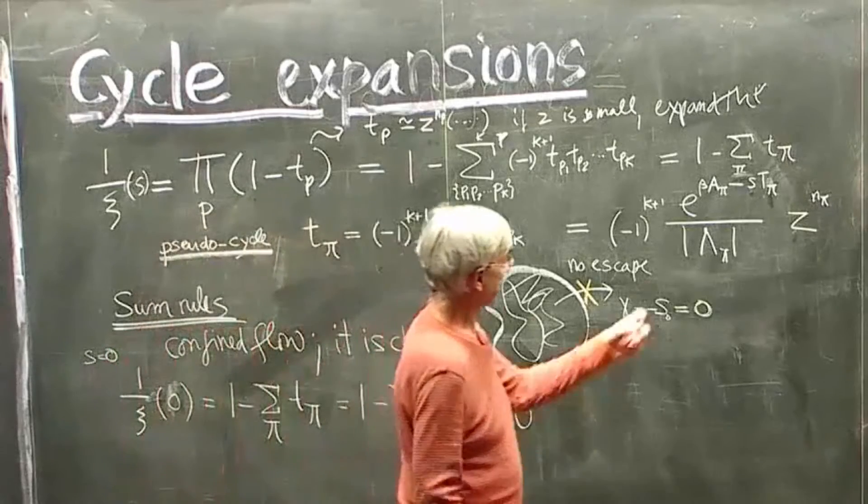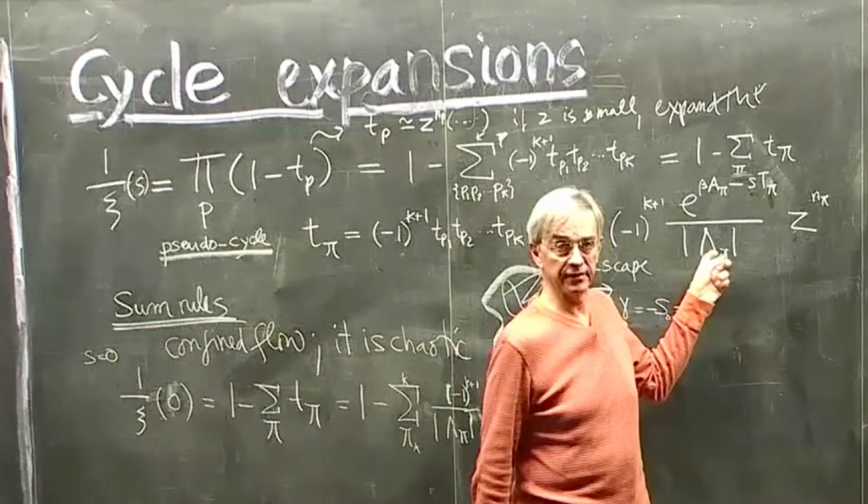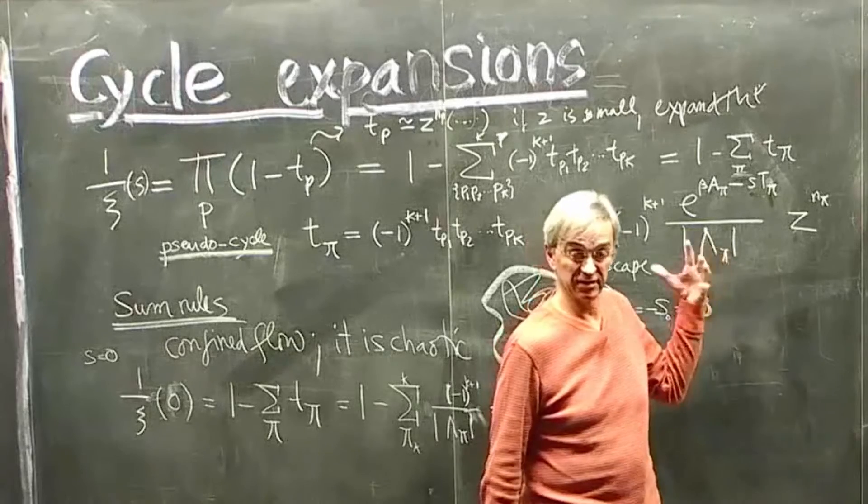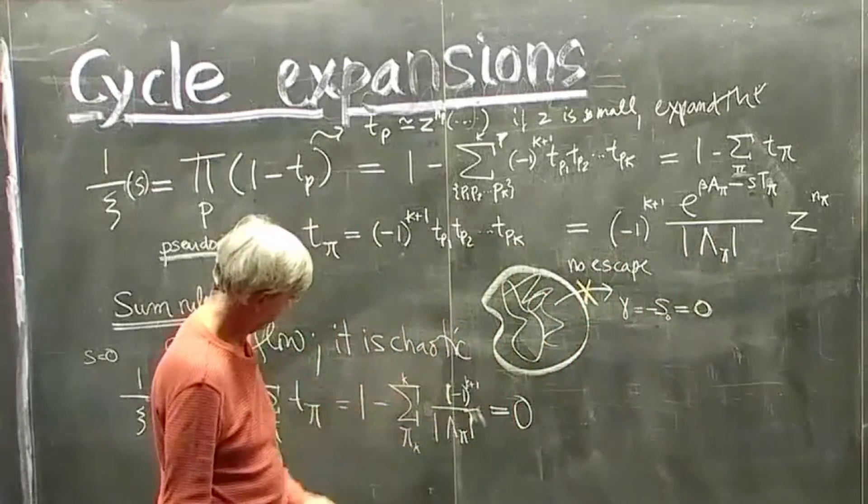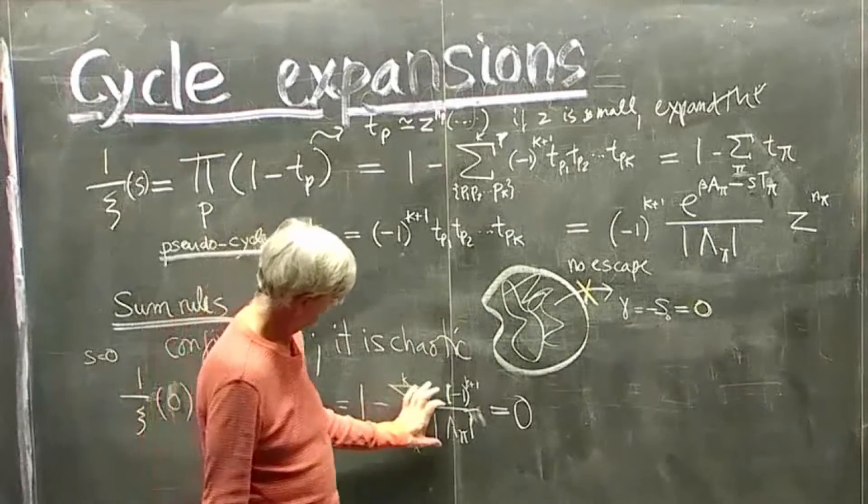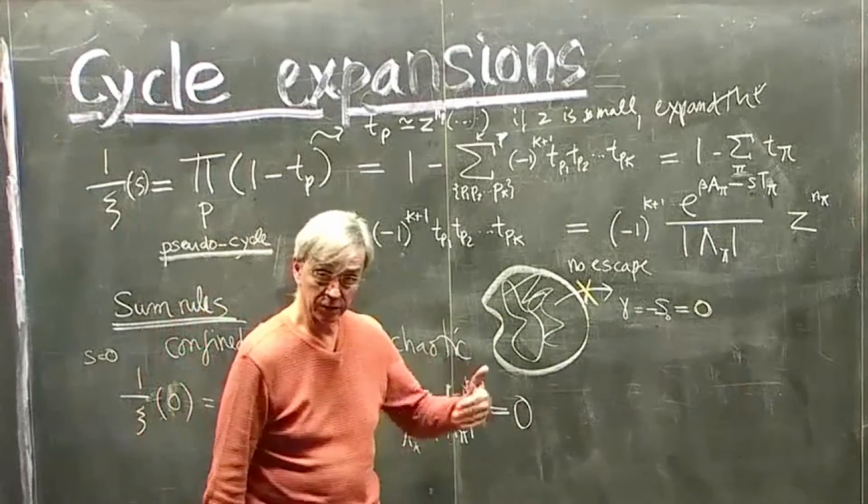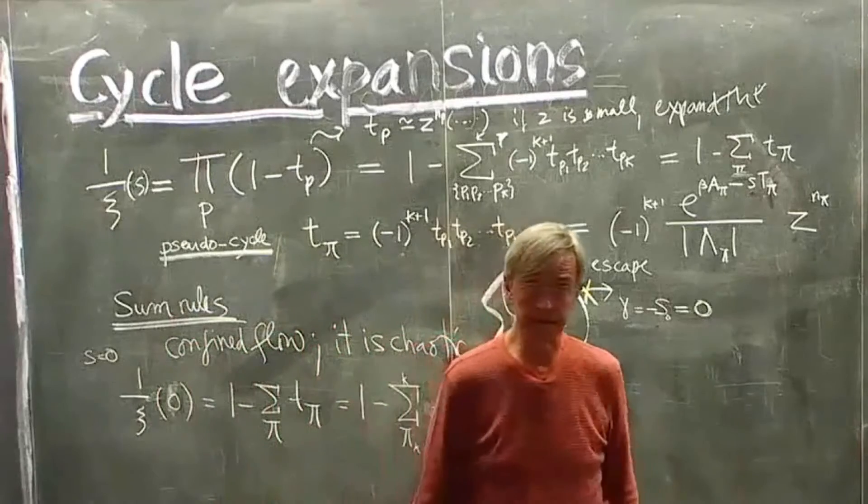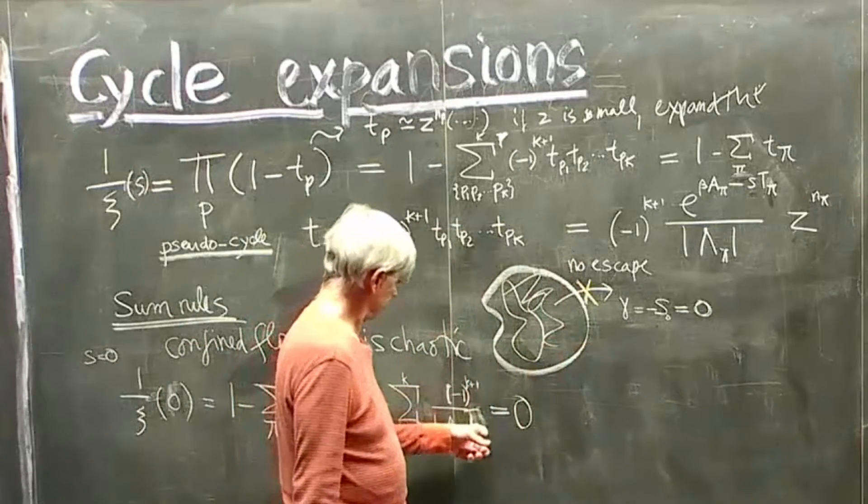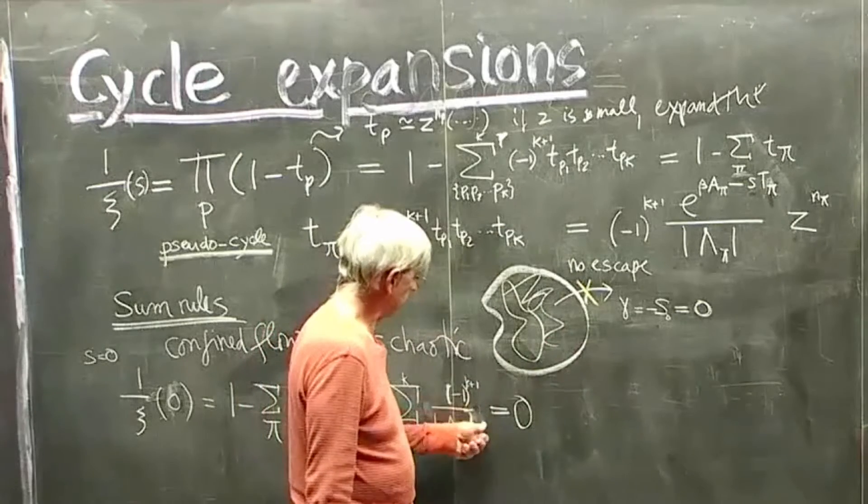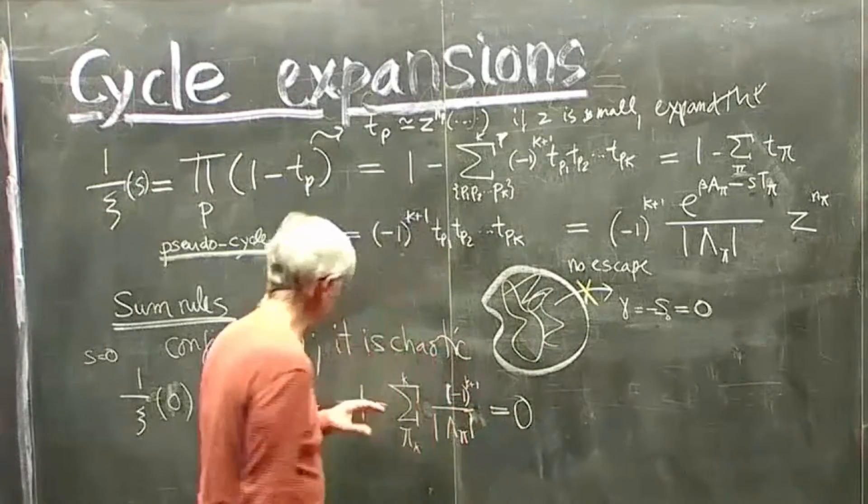And the way it works is that this sum is dominated by the short periodic orbits, because these guys grow exponentially with the period. So the short periodic orbits will make the biggest contribution to this. And if I go to some order in cycle lengths, I will be making an error, and I can numerically estimate the error. So this sum rule has two purposes.